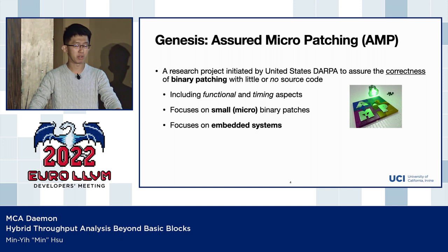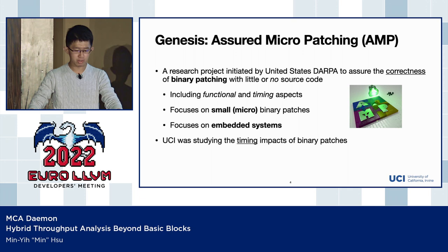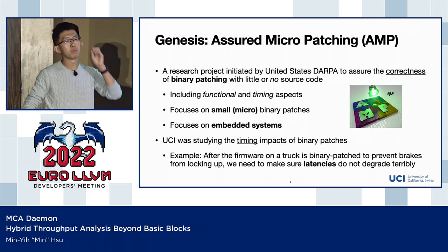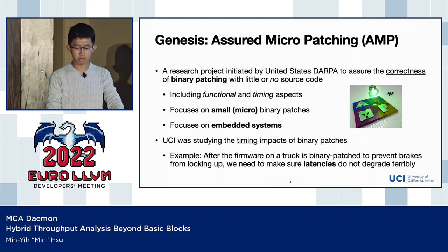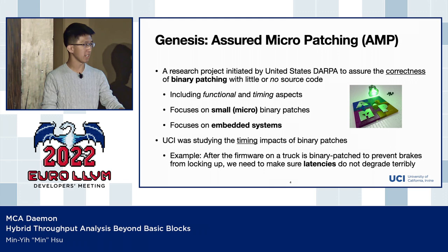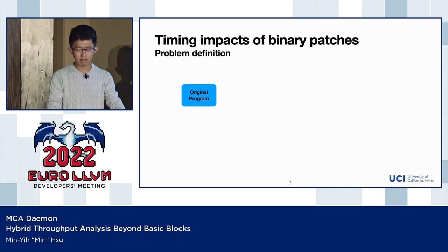We're also focusing on embedded systems, which is an important property. UCI was studying the timing impact of binary patches. A good example: imagine you have firmware in a truck and you find that in some circumstances the brake will just lock. So you need to patch that. And after patching, because we're talking about really critical software inside the truck, we need to make sure the timing of this firmware won't screw up after the patch — for instance, by preserving the same timing including latencies.